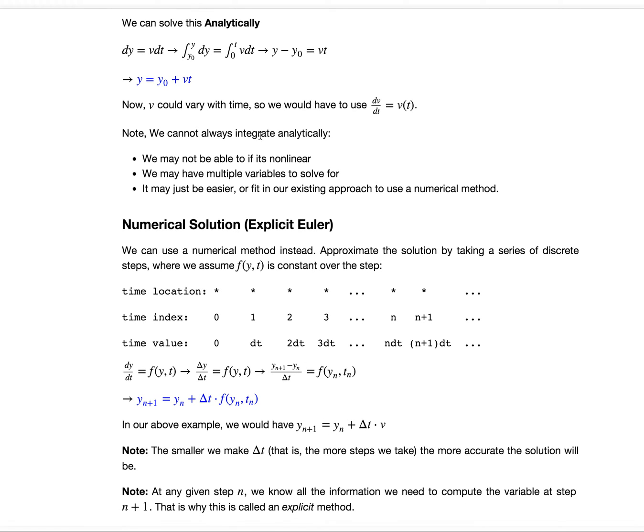In the above example, we would have y n plus 1, my new position is my old position, plus delta t times the velocity. The smaller we make delta t, that is, the more steps that we take, the more accurate the solution will be.